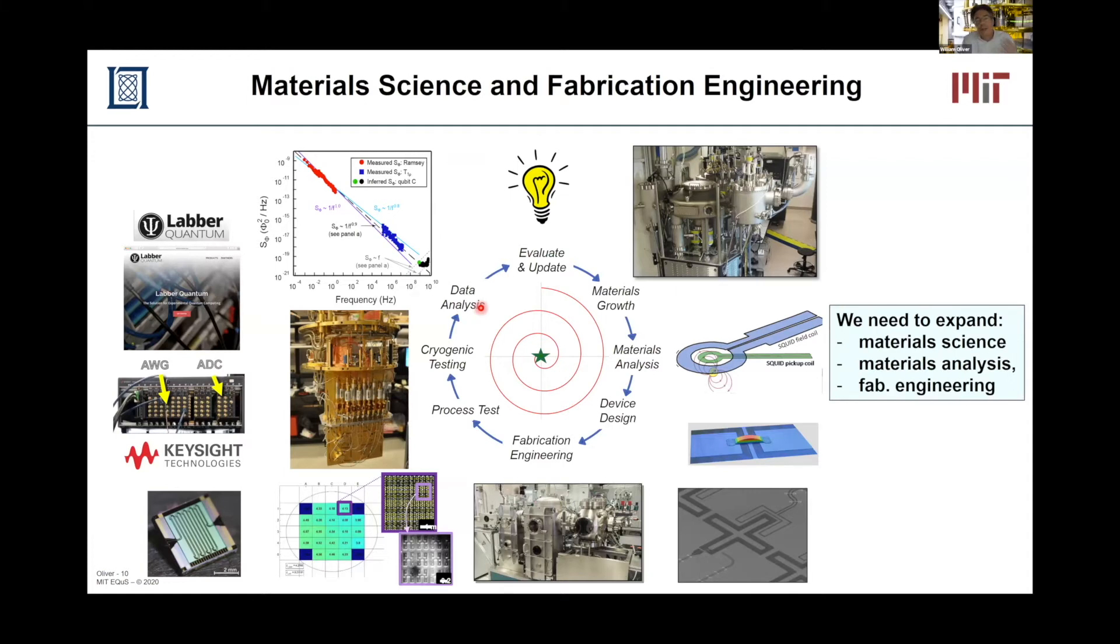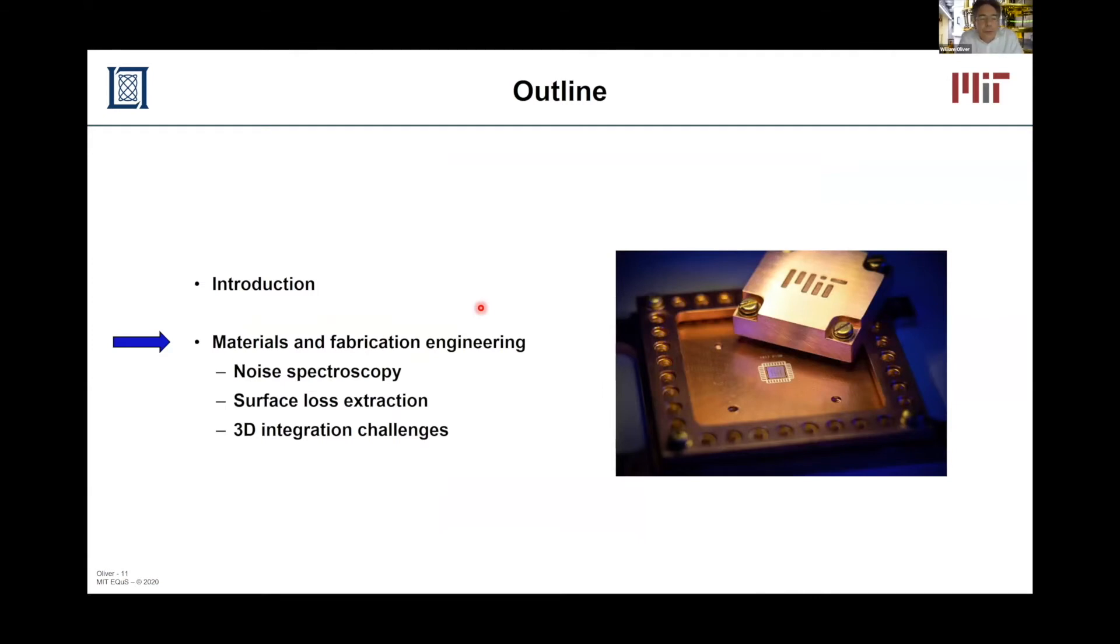This virtuous cycle requires materials analysis and expertise, fabrication expertise, and testing expertise. One of the challenges going forward is that we need to expand on material science, materials analysis, and fabrication engineering, if we want to take today's qubits and advance them by factors of 10. And this, in my opinion, is the connection to nanoscience. So let me talk about materials and fabrication engineering and the testing of how we test and make sure that what we did is working and then update our hypothesis. That involves something called noise spectroscopy using the qubit as a sensor of its environment.